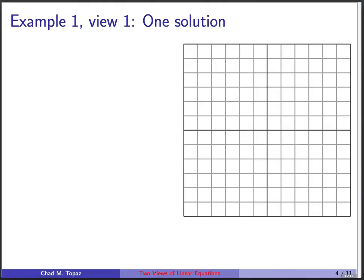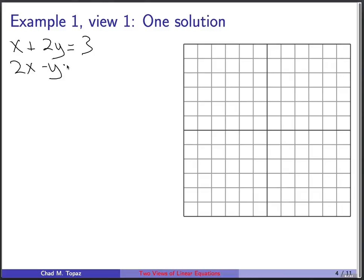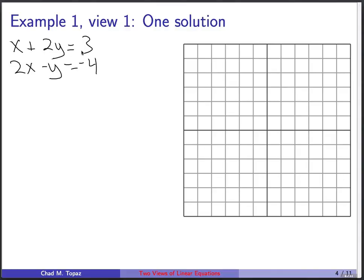Let's now think about systems of linear equations — a topic you've seen in high school mathematics. We're going to review how you probably thought about it and introduce a new way of thinking about it. Here's the first view, the traditional view: let's say we have x + 2y = 3 and 2x - y = -4. The way you were probably taught to think about this geometrically is as the intersection of two lines. If you rewrite the first equation in y = mx + b form, it turns into y = -1/2 x + 3/2, and the second becomes y = 2x + 4.